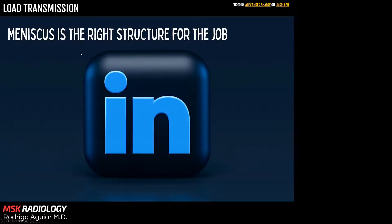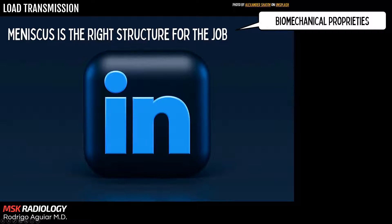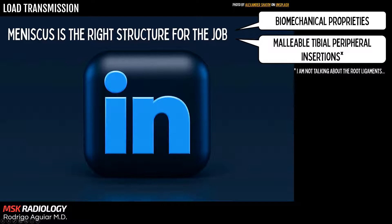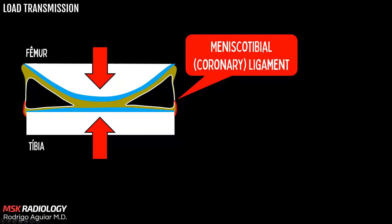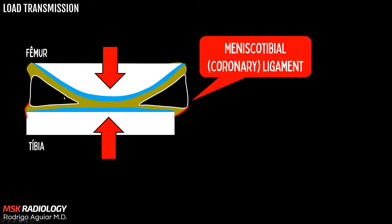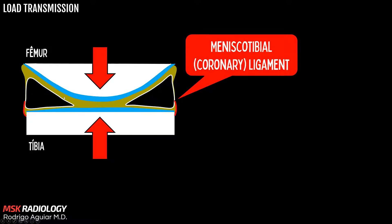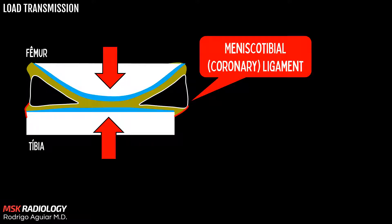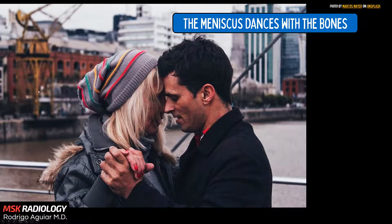The meniscus is the right structure for the job. Besides the many biomechanical properties that fit it for the job, another important fact is its malleable tibial peripheral insertions. I'm not talking about the strong meniscal root ligaments — I'm talking about the meniscus tibial or coronary ligaments. In this way, the meniscus can follow the femoral condyles to some extent during the movements of the knee; in other words, the meniscus dances with the bone structures inside the knee joint.